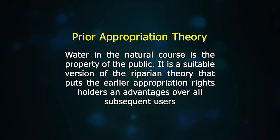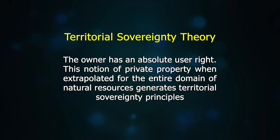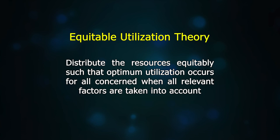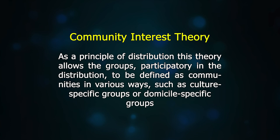The Territorial Sovereignty Theory: according to this theory, the owner has an absolute user right. This notion of private property when extrapolated for an entire domain of natural resources generates territorial sovereignty principles. The Equitable Apportionment Theory: it treats all claimants as equal right holders and through legal means apportions resources by individual needs. The Equitable Utilization Theory: it aims to distribute resources equitably such that optimum utilization occurs for all concerned when all relevant factors are taken into account. The Community Interest Theory: as a principle of distribution, this theory allows the groups participating in distribution to be defined as communities in various ways, including culture-specific and domicile-specific groups.